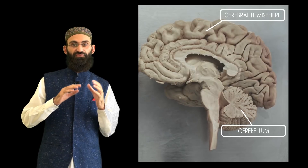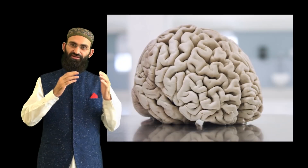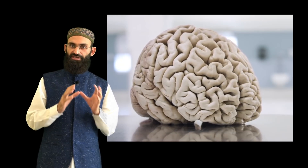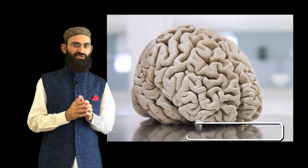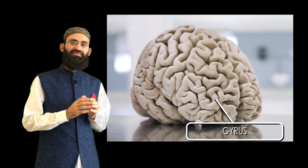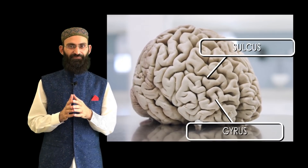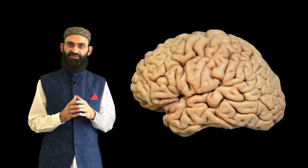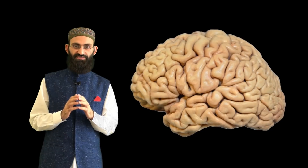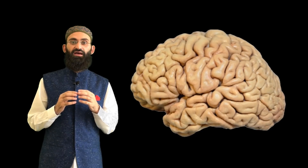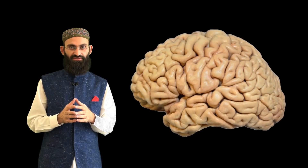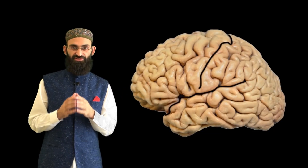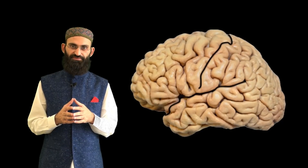The cerebral cortex is a convoluted structure curved upon itself. It consists of multiple tortuous folds called gyri, separated by deep grooves called sulci. On the lateral surface of the cerebral hemisphere there are two important sulci that serve as anatomical landmarks: the central sulcus and the lateral sulcus, also called the Sylvian fissure.